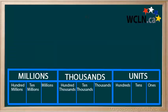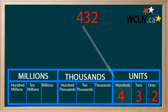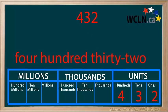When we see this number, we know what it represents because we understand place value. We know that there are two ones, three tens, and four hundreds. And we say the number word four hundred thirty-two.